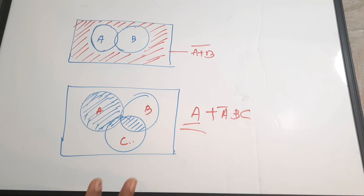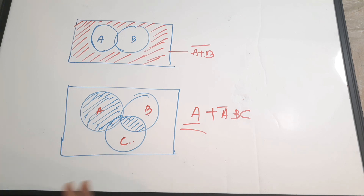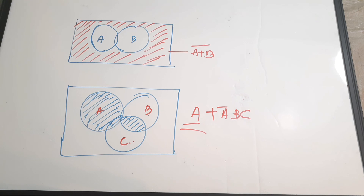I hope that you found this video useful for your preparation. You understood how to use Venn diagrams to solve logical expressions, how to represent them, and the basic concepts: what is intersection, what is union, what is A plus B, what is AB, what is A complement. If you found this video useful, please give it a thumbs up, share it with your friends, and if you want more videos please subscribe to the channel. Thanks for watching and keep on watching.